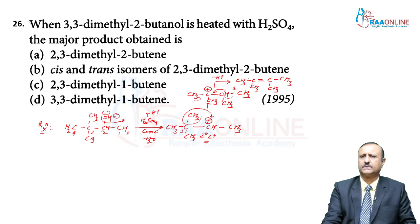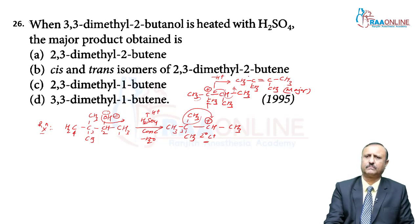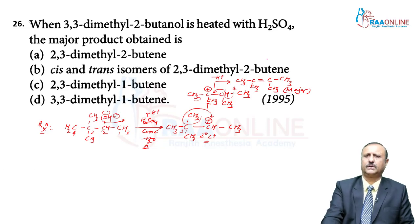There are 12 alpha hydrogen atoms present (3+3=6, 6+3=9, 9+3=12). The major compound is the more substituted alkene, formed by heating with concentrated H₂SO₄ and removal of water molecules.